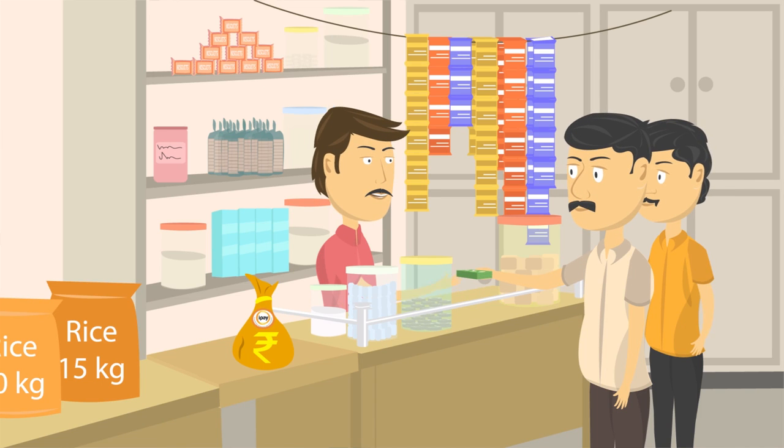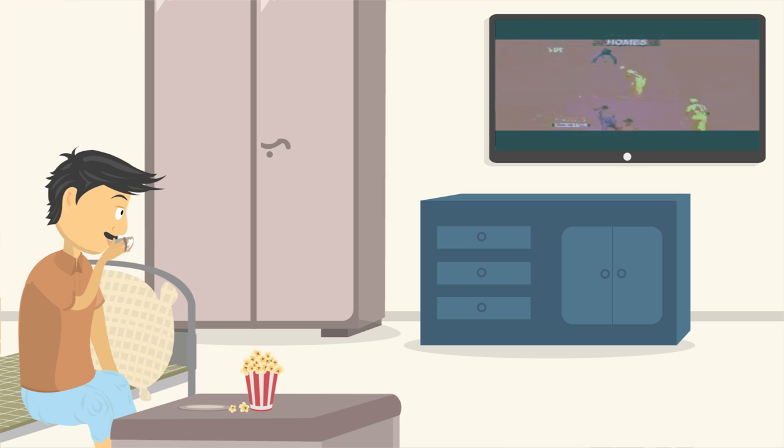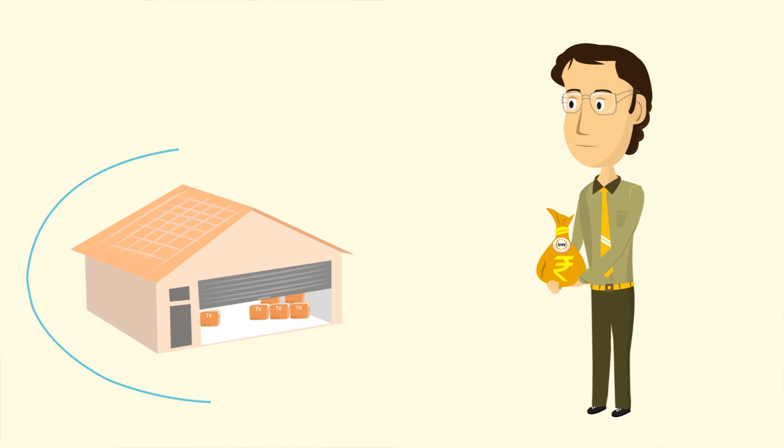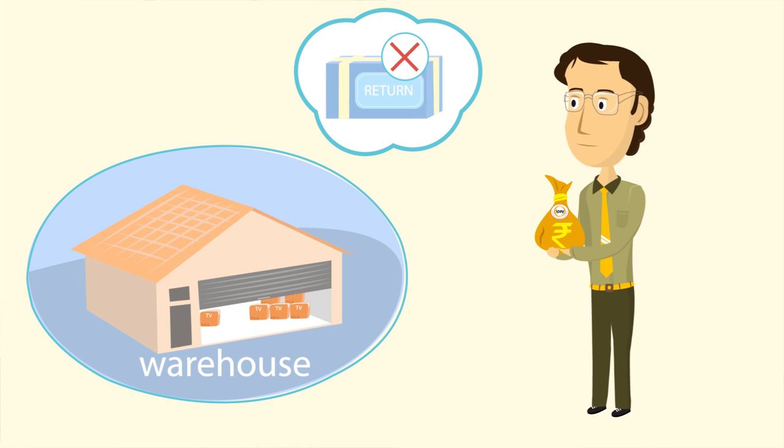Vamsi gets some amount as commission. Moreover, he is able to sell more popcorn and coffee powder to Keshav. Sandeep is happy with no return shipments shipped prepaid order.